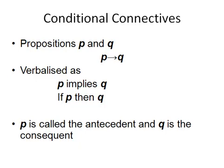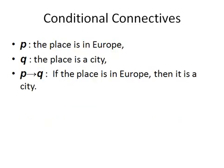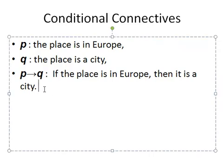P is called the antecedent and Q is often called the consequent. So let's look at a little example. P: a place is in Europe. Q: the place is a city. We might verbalize the statement P implies Q as 'if the place is in Europe then it is a city.' This is what we are going to call a compound statement.